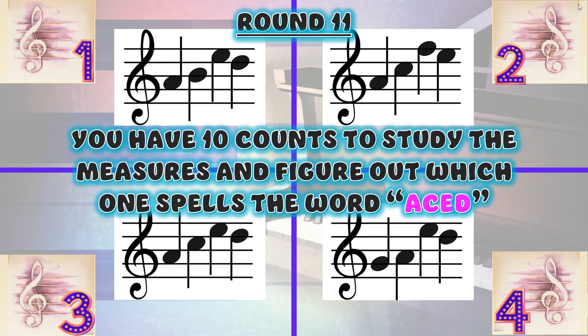Round 11. You have 10 counts to study the measures and figure out which one spells the word 'aced.'